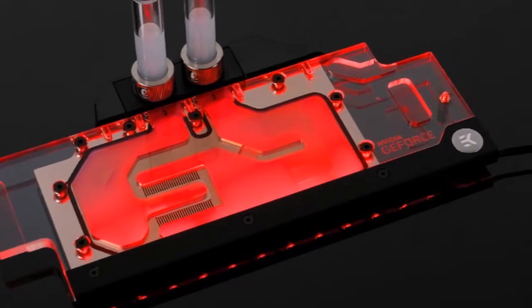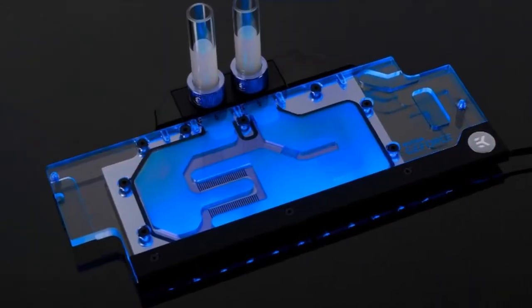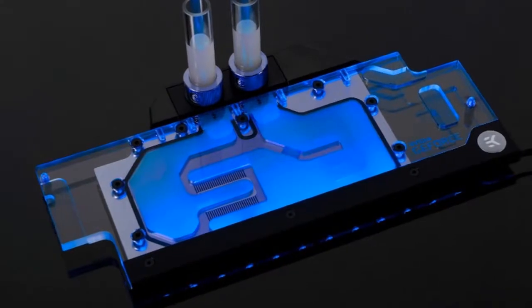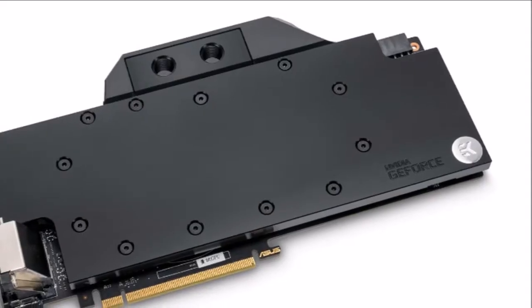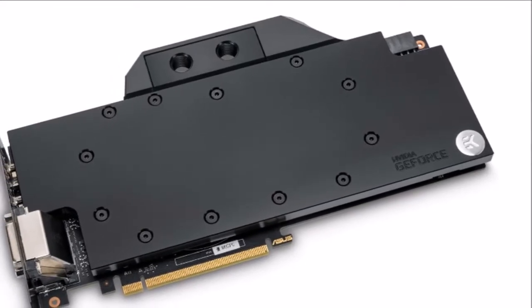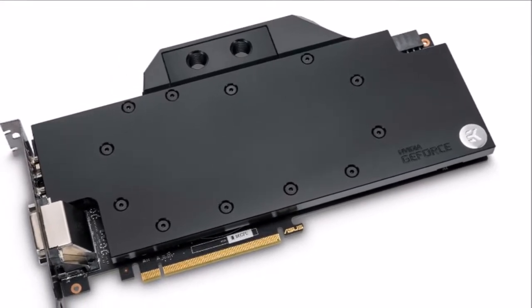This water block directly cools the GPU voltage regulation module, as water flows directly over these critical areas, thus allowing the graphics card and its VRM to remain stable under high overclocks.